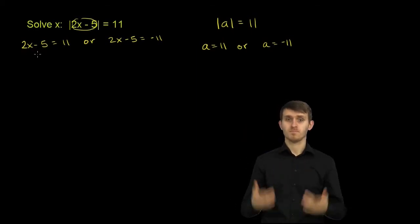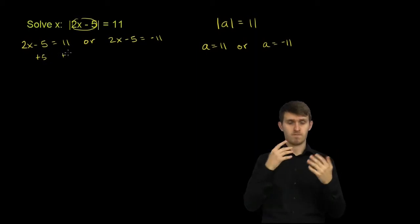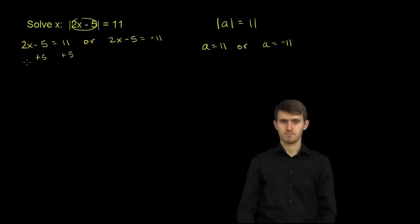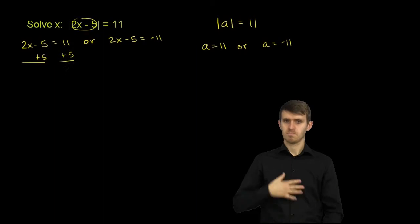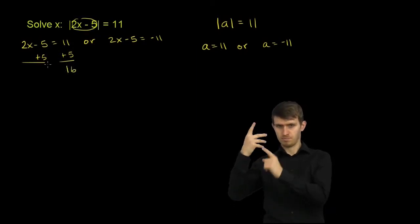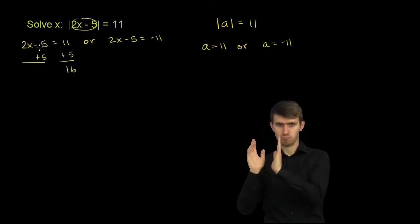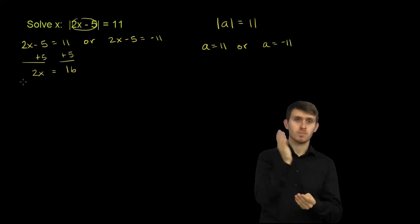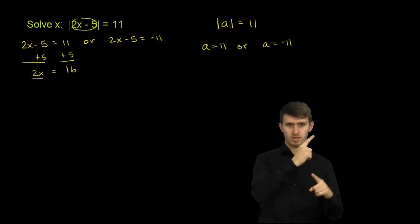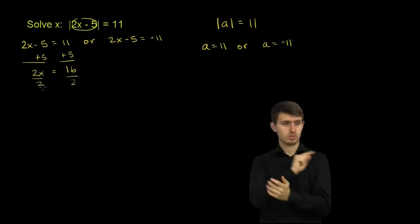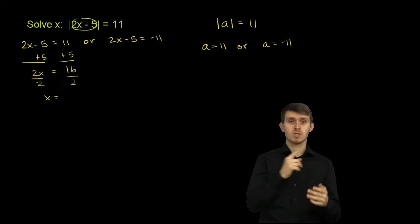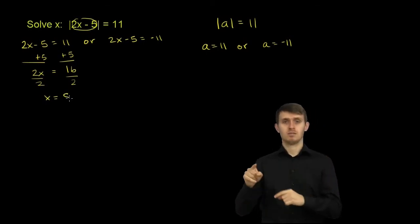Over here, we can add 5 to both sides of this equation. We get 11 plus 5 is 16. 2x minus 5 plus 5 is just 2x. So 2x is equal to 16. Divide both sides by 2 — we get x is equal to 8.